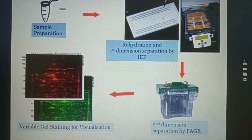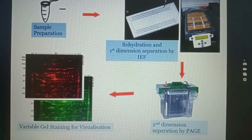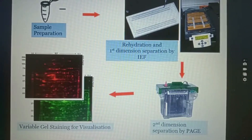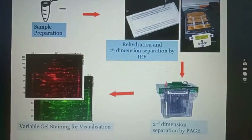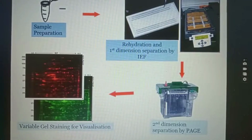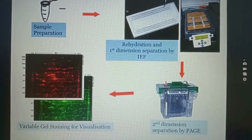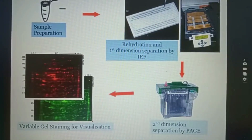Protein extract is then separated based on pH value in isoelectric focusing. Proteins migrate in an IPG gel strip and become immobilized when they reach their isoelectric point. After isoelectric focusing, we place the IPG gel strip at the top of a polyacrylamide gel and allow polyacrylamide gel electrophoresis, which separates proteins based on molecular mass.